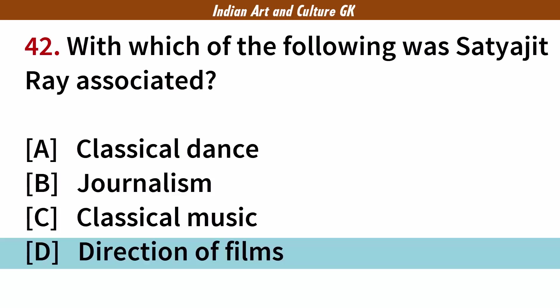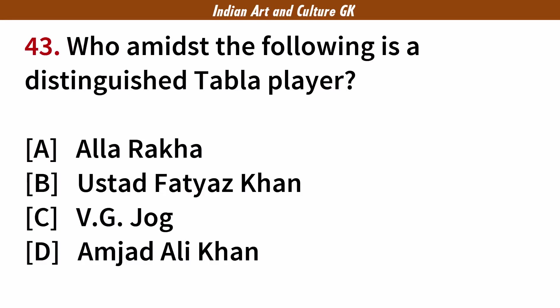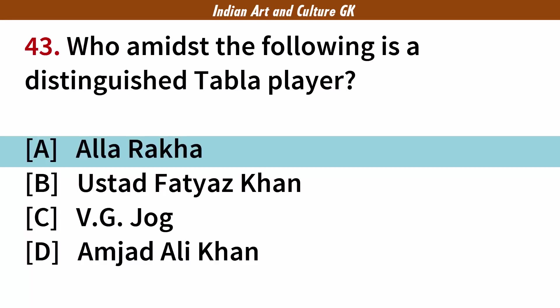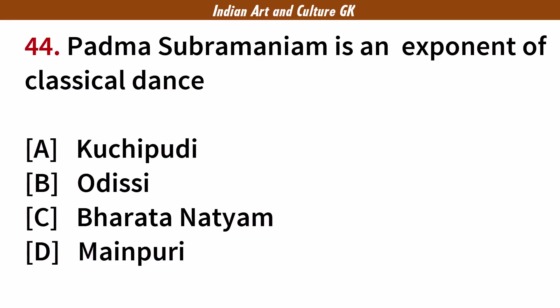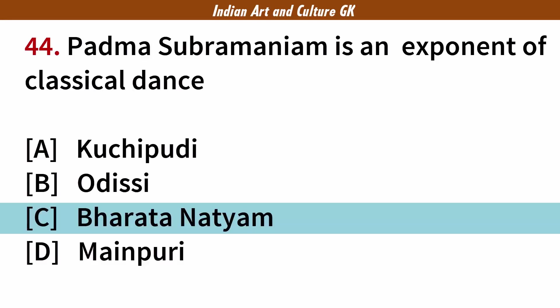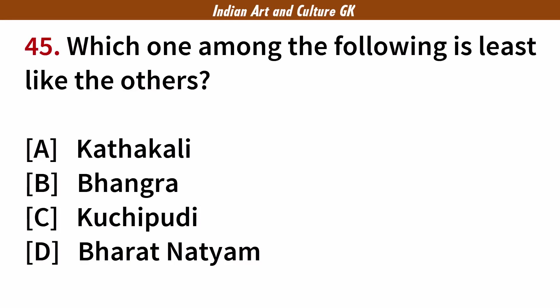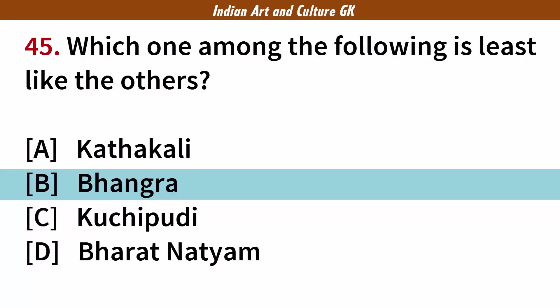Who among the following is a distinguished tabla player? Answer: A. Allah Rakha. Padma Subramaniam is an exponent of which classical dance? Answer: C. Bharatanatyam. Which one among the following is least like the others? Answer: B. Bhangra.